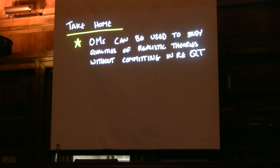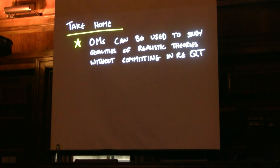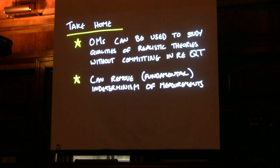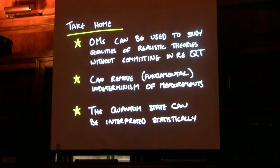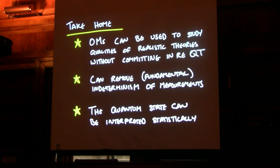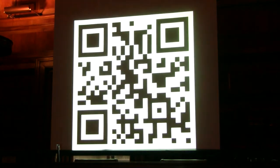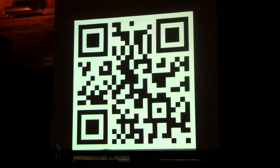Let's have a quick recap. You can use these ontological models to look at the role of the quantum state, and you can talk about particular qualities — contextuality, determinism, sci-ontic or sci-epistemic-ness — without committing to particular interpretations of quantum theory; you can just rely on the uncontroversial instrumental approach. We can remove indeterminism from measurements in quantum theory, as demonstrated in the first step, and the quantum state can be interpreted statistically.